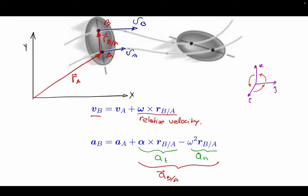For acceleration in general plane motion, the acceleration at B equals the acceleration at A plus two relative terms — the tangential and normal components of relative acceleration of B with respect to A. The tangential acceleration term is alpha cross r of B with respect to A. The normal acceleration term is omega-squared multiplied by r of B with respect to A, in the negative direction, because it points toward A.